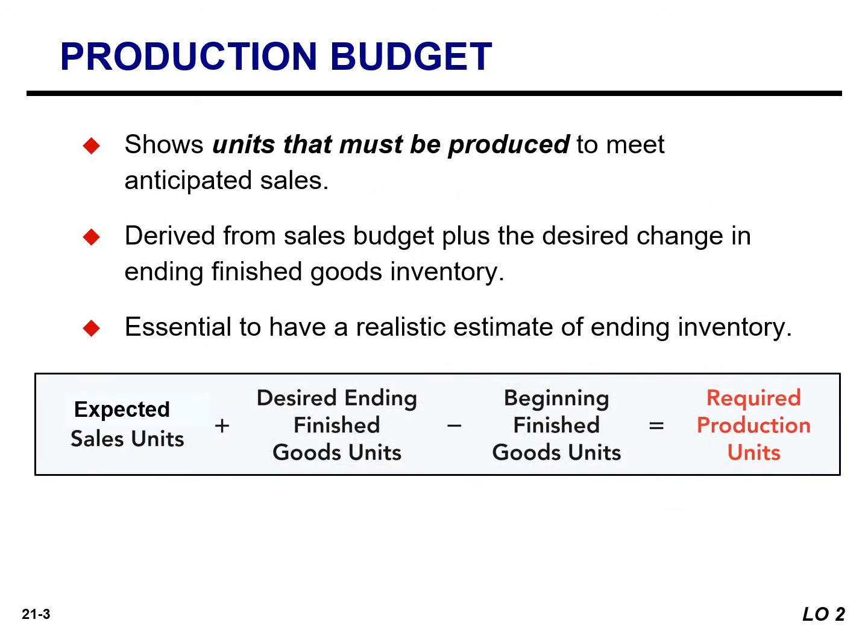The production budget shows the number of units of a product to produce to meet anticipated sales demand. Production requirements are determined from the following formula: expected sales in units, plus desired ending finished goods in units, minus beginning finished goods units.